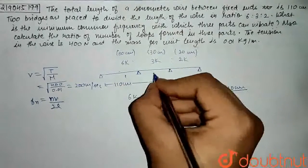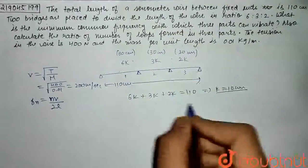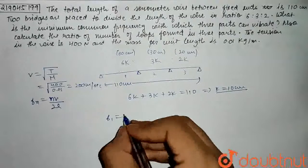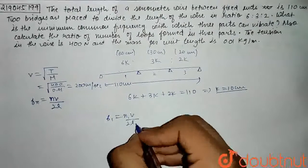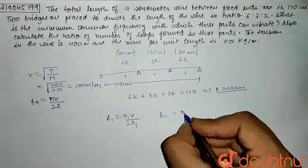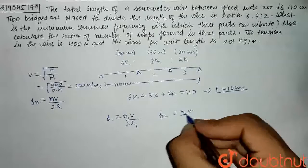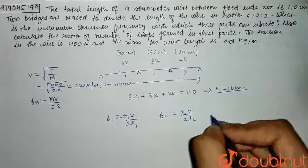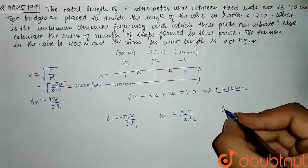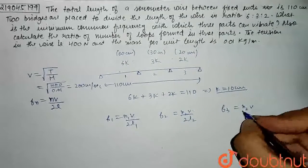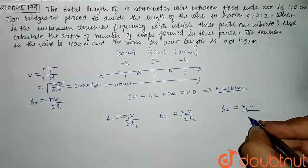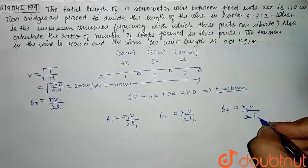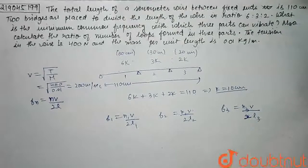Now we name the three parts as part 1, part 2, and part 3. Frequency F1 = N1·V / 2L1, similarly F2 = N2·V / 2L2, and F3 = N3·V / 2L3. These are the three frequencies for the three parts.